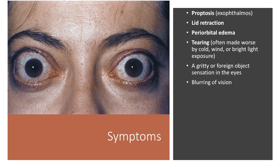The tearing, grittiness, and blurriness can be due to dryness, which occurs because the lids are retracted and cannot blink properly, because the tear-producing glands have been affected by the autoimmune process and aren't functioning well, and/or because the forward bulging of the eyes prevents them from being completely covered by the lids.